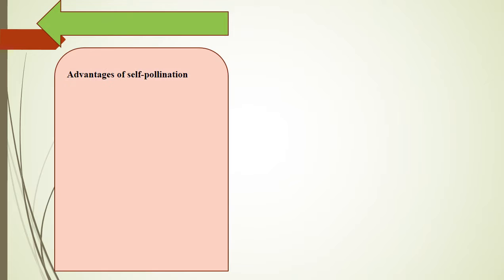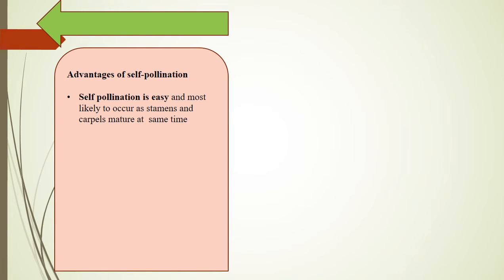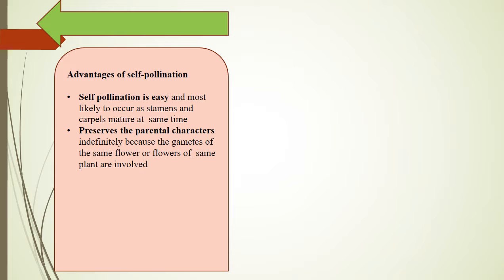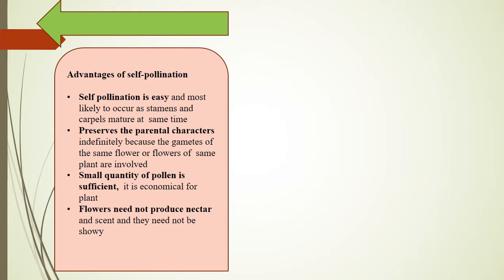Advantages of self-pollination: Self-pollination is easy and most likely to occur as stamens and carpels mature at the same time. It preserves the parental characters indefinitely because the gametes of the same flower or flowers of the same plant are involved. A small quantity of pollen is sufficient, making it economical for the plant. Flowers need not produce nectar and scent, nor do they need to be showy. Flowers generally do not depend on pollinating agents.